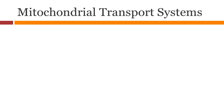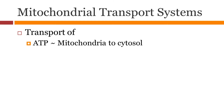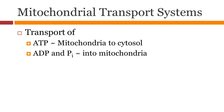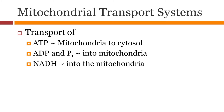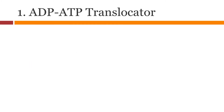The mitochondria needs a transport system to move things across the inner membrane and carry out controlled reactions. We need to transport ATP generated in the mitochondria to the cytosol and bring back ADP and inorganic phosphate. Also, NADH needs to be transported into the mitochondria to utilize the energy.